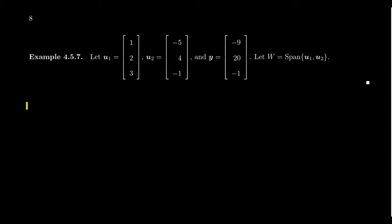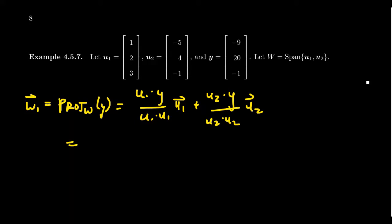So if we want to calculate w1, this is supposed to equal the orthogonal projection onto W of y. So this will look like the sum: we're going to take u1 dot y divided by u1 dot u1 times u1, and then add to that u2 dot y divided by u2 dot u2 times u2. So doing this calculation here, u1 dot y, we're going to get negative 9 plus 40 minus 3, and this will sit above 1 plus 4 plus 9, and we're going to times that by [1, 2, 3].